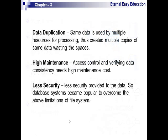The limitations of the file system are: data duplication — the same data used by multiple resources created multiple copies wasting storage space; high maintenance — access control and verifying data consistency needed high maintenance cost; and less security — less security was provided to the data. So the database system became popular to overcome these limitations. The evolution goes: first paper, then punched cards, then file systems, then DBMS.